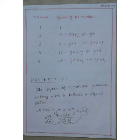Property 7. The square of a natural number ending with 5 follows a definite pattern. So here, this is actually an easy multiplication method or easy way to find the square of numbers ending with 5.